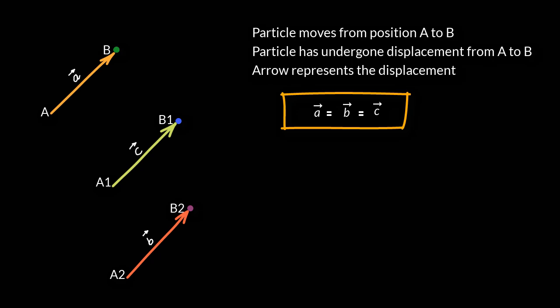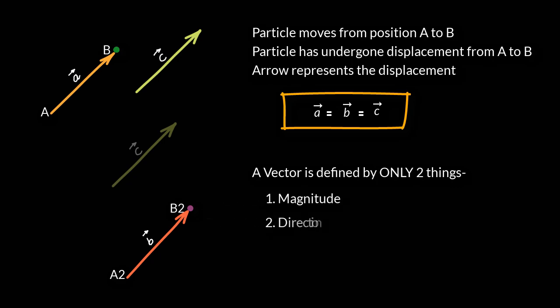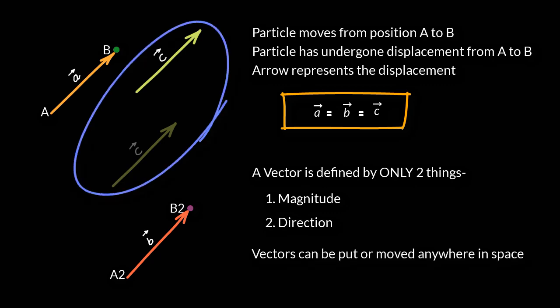Another way of looking at this is that you can slide this vector over here and its identity would not change, primarily because its identity is defined by two things: one, its magnitude, and two, its direction, which you can see has not changed even when you brought it over here.